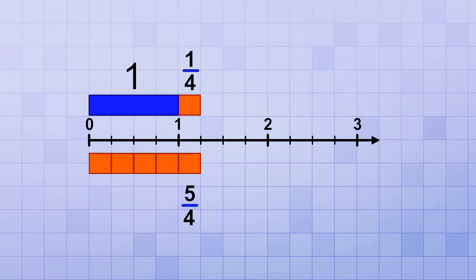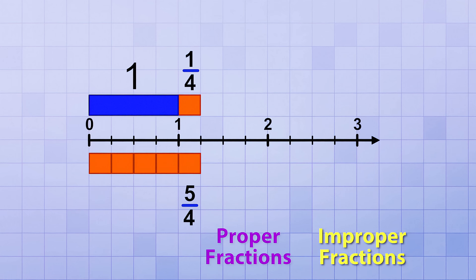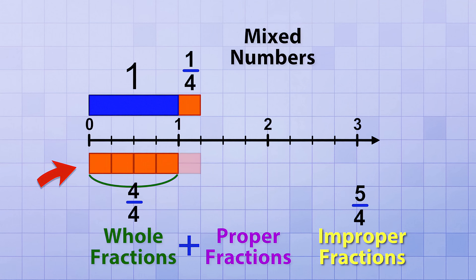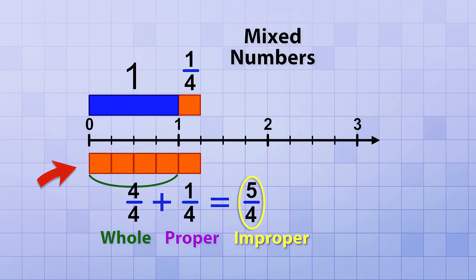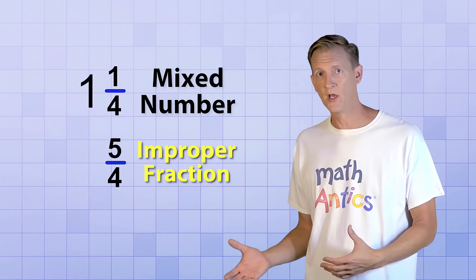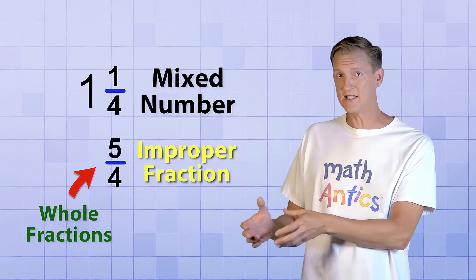Have a good look at this diagram for a minute because it shows us something really important about how proper fractions, improper fractions, whole fractions, and mixed numbers all relate to each other. We have 5 fourths — an improper fraction — formed by adding a proper fraction to a whole fraction. When we added 1 more fourth to the whole fraction 4 fourths, it became the improper fraction 5 over 4. An improper fraction is a combination of one or more whole fractions and a proper fraction. Since whole fractions simplify to the whole number 1, we get a mixed number: the combination of the whole number 1 and the proper fraction 1 fourth. That's all a mixed number is — the sum of a whole number and a proper fraction, and an alternate way to write an improper fraction.